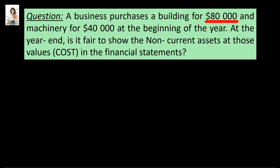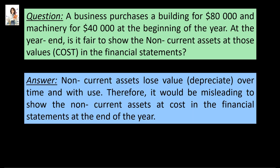A business purchases a building for $80,000 and machinery for $40,000 at the beginning of the year. So at the year end, is it fair to show the non-current assets at $80,000 and $40,000 — i.e. at their respective costs — in the financial statements? As we have already discussed, non-current assets lose value, i.e. they depreciate over time and with use. So naturally, it would be misleading to show the non-current assets at cost in the financial statements at the end of the year.